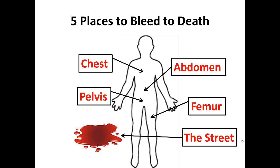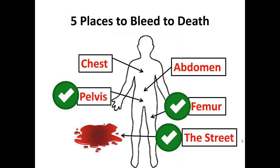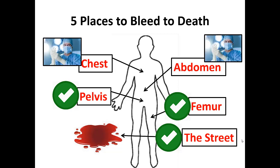When talking about places where patients can bleed to death, there are five locations you need to know, but really only three we can fix in the pre-hospital setting. We can stop bleeding from the extremities by doing direct pressure or using a tourniquet, stabilize a femur, and stabilize a pelvis. Injuries to the chest or abdomen usually require a surgeon — that's why we go to the ER.